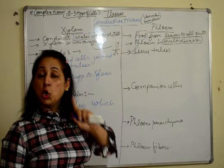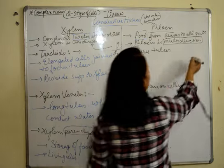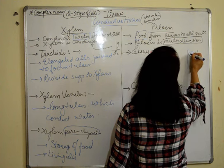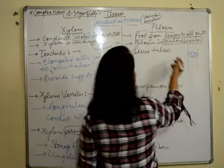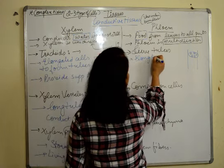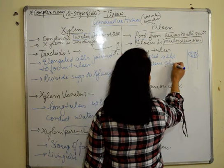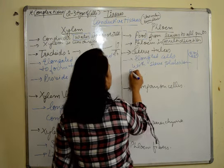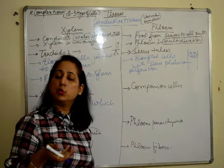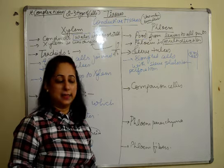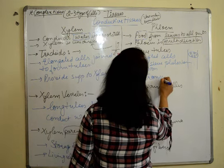Sieve tubes are elongated cells which have perforations in them and have sieve plates. Making a diagram, this type of structure has holes present in it — they have sieve plates with perforations. Perforation means having holes, just like the sieve you use at home to strain tea. Their function is transportation.